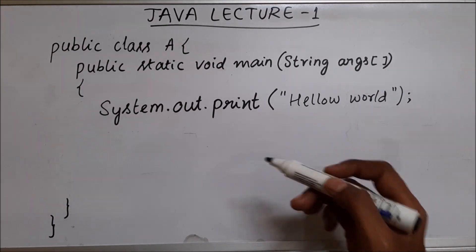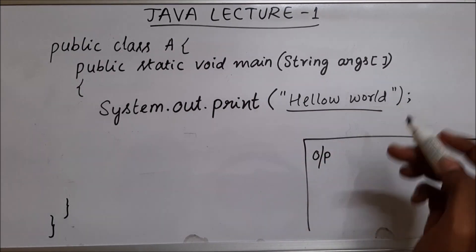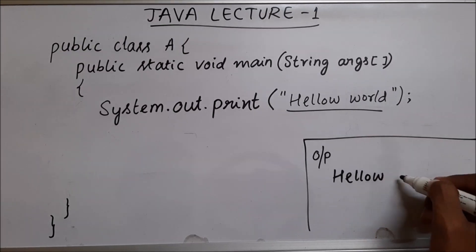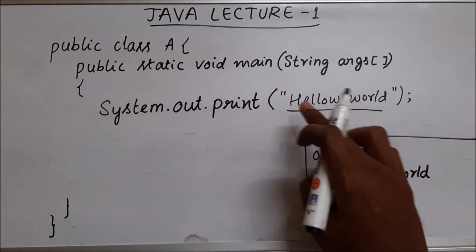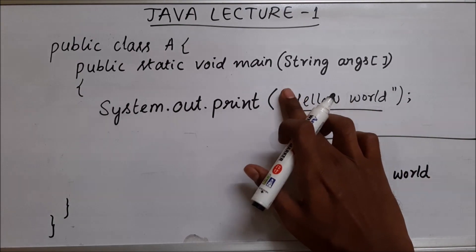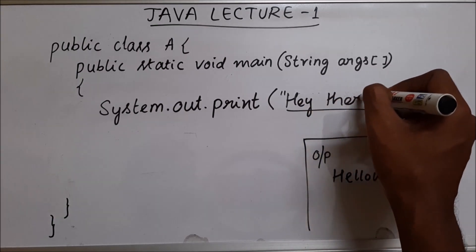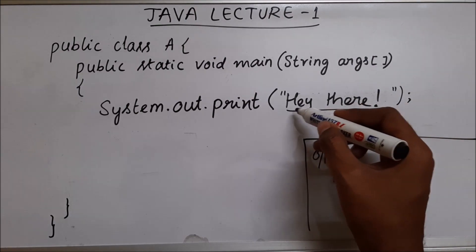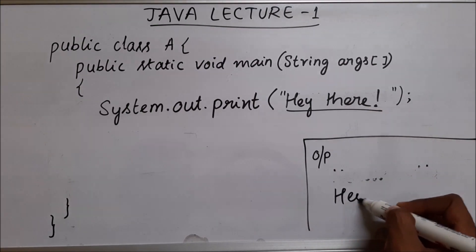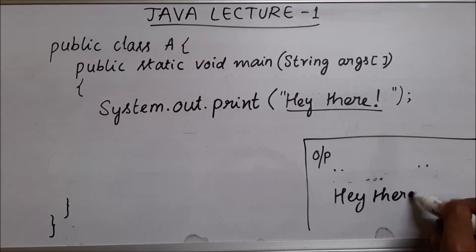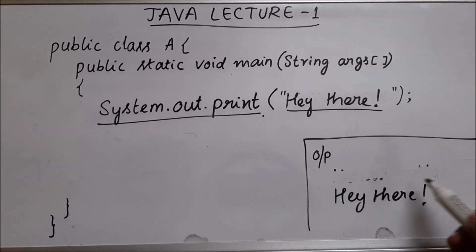So this is our program. When we run this program, in our output screen we will see these words — it will print hello world. Instead of hello world, if you write something else, let's say you write 'hey everyone' or 'hey there', if you write these words inside these double quotes and run this program, your output will be 'hey there'. So anything you put inside the double quotes of system.out.print is going to print to the output screen.